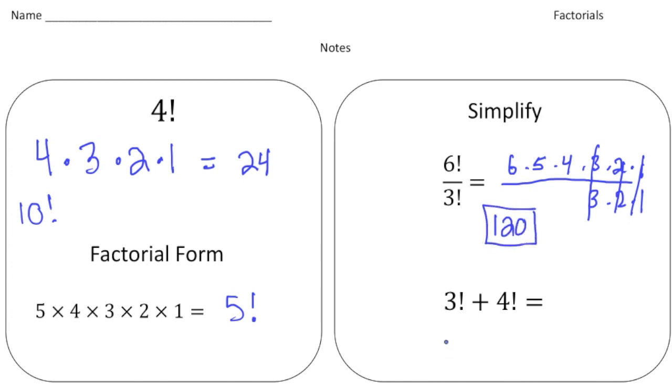Alright, finally, here we have 3 factorial plus 4 factorial. So what I'm going to do is I'm going to expand both of these. So 3 factorial is 3 times 2 times 1, and then plus 4 factorial, which is 4 times 3 times 2 times 1.